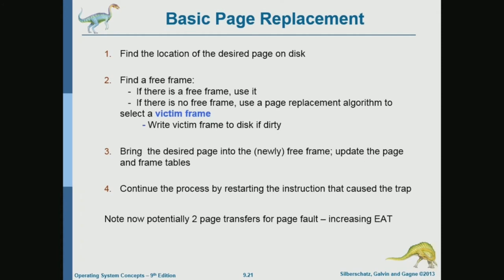The basic idea is first the system looks for a free frame. If there is a free frame, no problem — use the free frame. If there is no free frame, use one of the policies we are about to study to identify a victim frame. That victim will get copied to disk only if it's dirty. If it's not dirty, we don't have to copy it. We just load the new page into the frame, then restart the process that ran into a page fault.